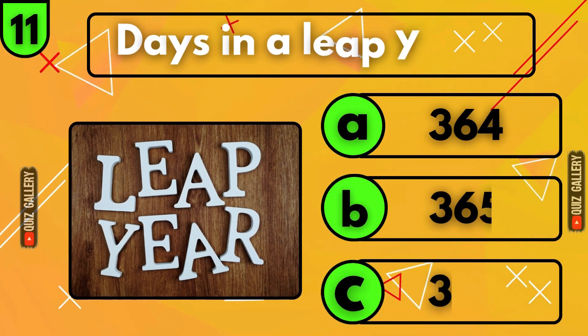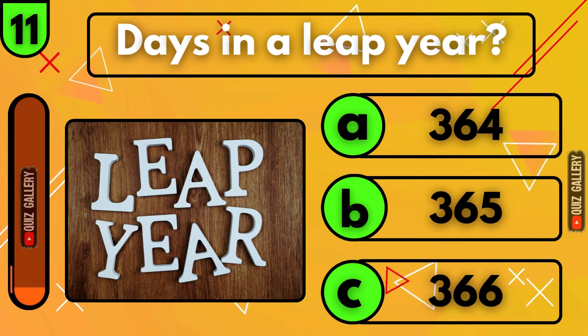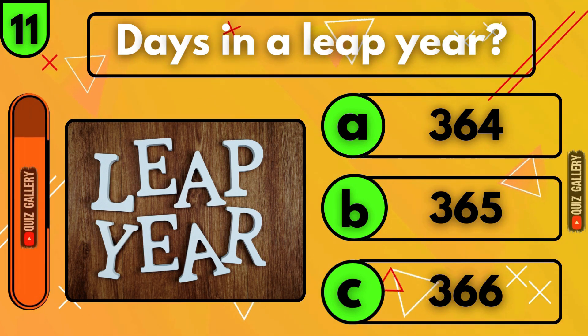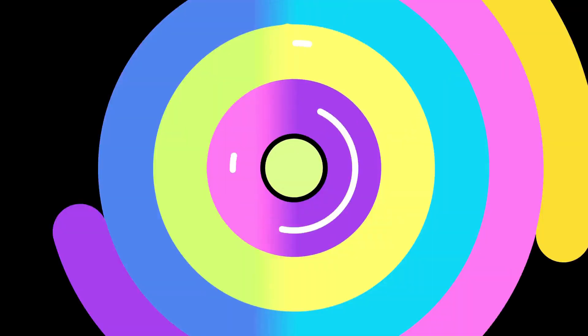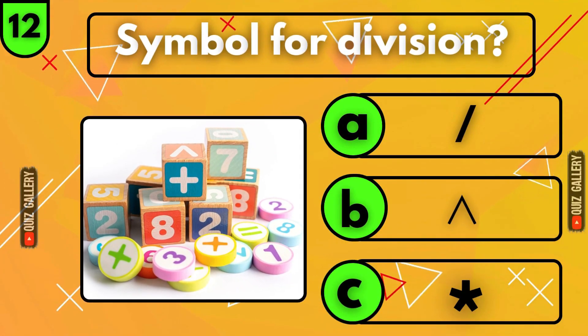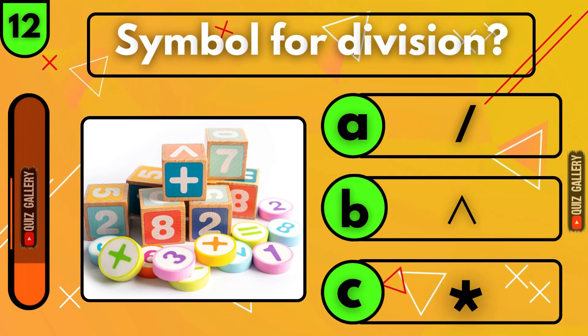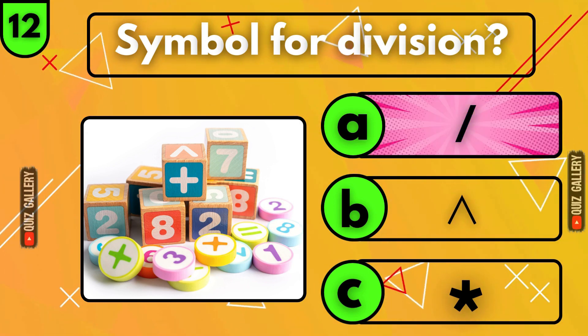How many days are there in a leap year? Three hundred sixty-six days! What is the symbol for division? Yes! You guessed right!